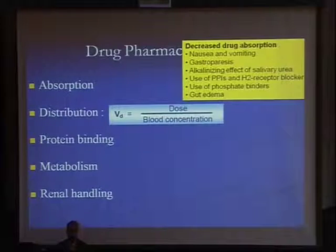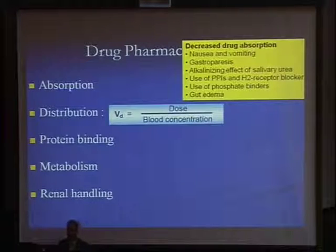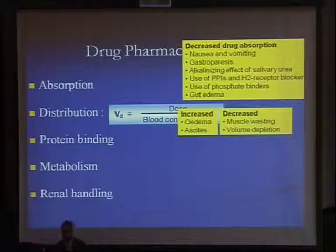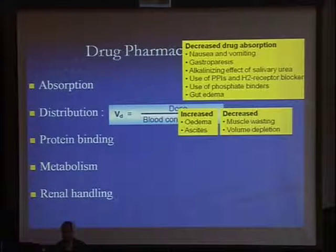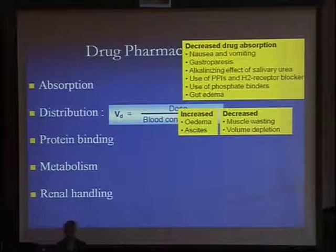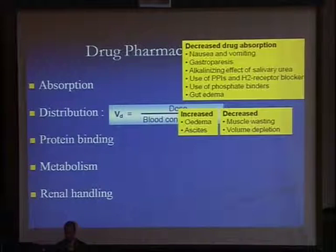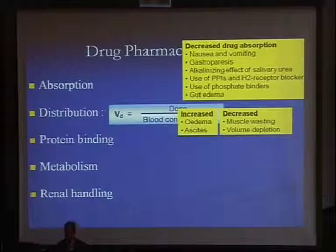What about distribution? Your patient will fall into one of two categories: either there is going to be an increase in the volume of distribution due to the presence of edema or ascites, or there is going to be a decrease due to the presence of muscle wasting and volume depletion. So again, this is going to be variable.